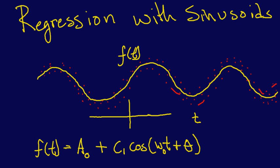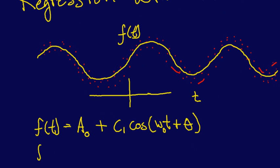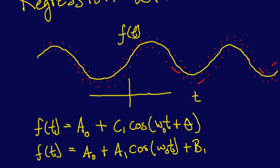Now, the other thing that we could do is we could actually rewrite this as f of t equals a naught plus a1 cosine omega naught t plus b1 sine omega naught t.